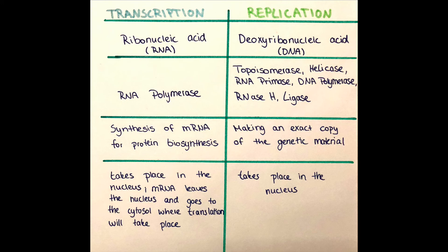So what was the purpose? In the transcription the purpose was to synthesize a mRNA, so a messenger for the protein which is synthesized in the cytosol. And in the replication we made an exact copy of the whole genetic material within a cell, which is done in the interphase of the mitosis — which we will also come to probably by the start of next week — before a cell divides from 1 to 2, 2 to 4, and so on.